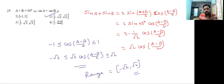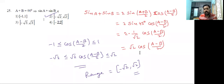Using the sin a + sin b formula: 2sin((a+b)/2)·cos((a-b)/2). Substituting a + b = 90°, we get sin 45° = 1/√2, so 2·(1/√2)·cos((a-b)/2) = √2·cos((a-b)/2). Since the range of cos((a-b)/2) is [-1, 1], the range of the function is [-√2, +√2].